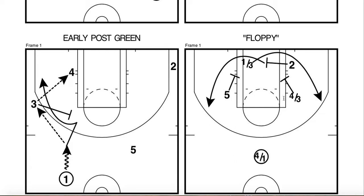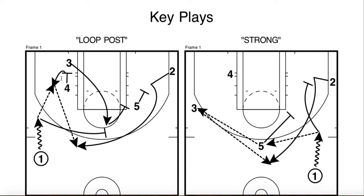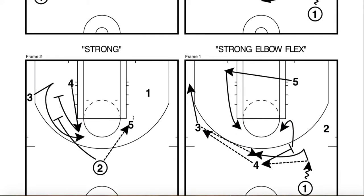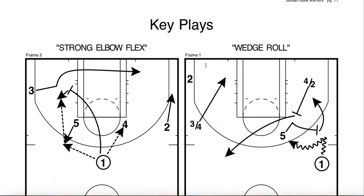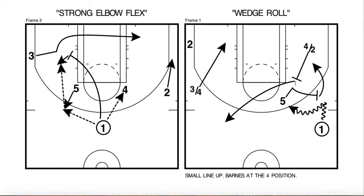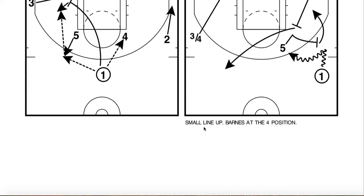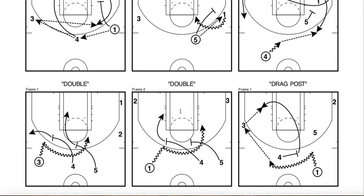Floppy — still a common action across the whole NBA, Warriors included. Loop post — another way to get to those post splits. Motion strong — a San Antonio Spurs staple swing. Stagger away, post occupied, into a little flex action ultimately at the end. Here you see that wedge roll I talked about. You see notes sometimes underneath the plays — say, Barnes at the small four back then.